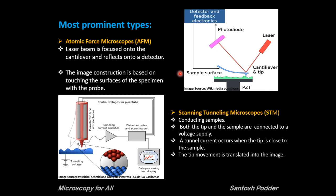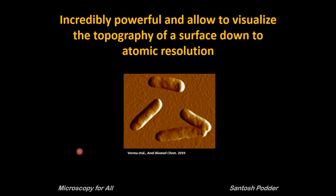The second type of scanning probe microscope is the scanning tunneling microscope (STM). In this system, the main limitation is that only conducting samples can be used. Both the tip and the sample are connected to a voltage supply, and a tunnel current occurs when the tip is close to the sample — the tip movement is then translated into an image. Using scanning probe microscopy, we can visualize the topography of a surface down to atomic resolution — these microscopes are incredibly powerful. Here you can see an image of Mycobacterium taken using an atomic force microscope.